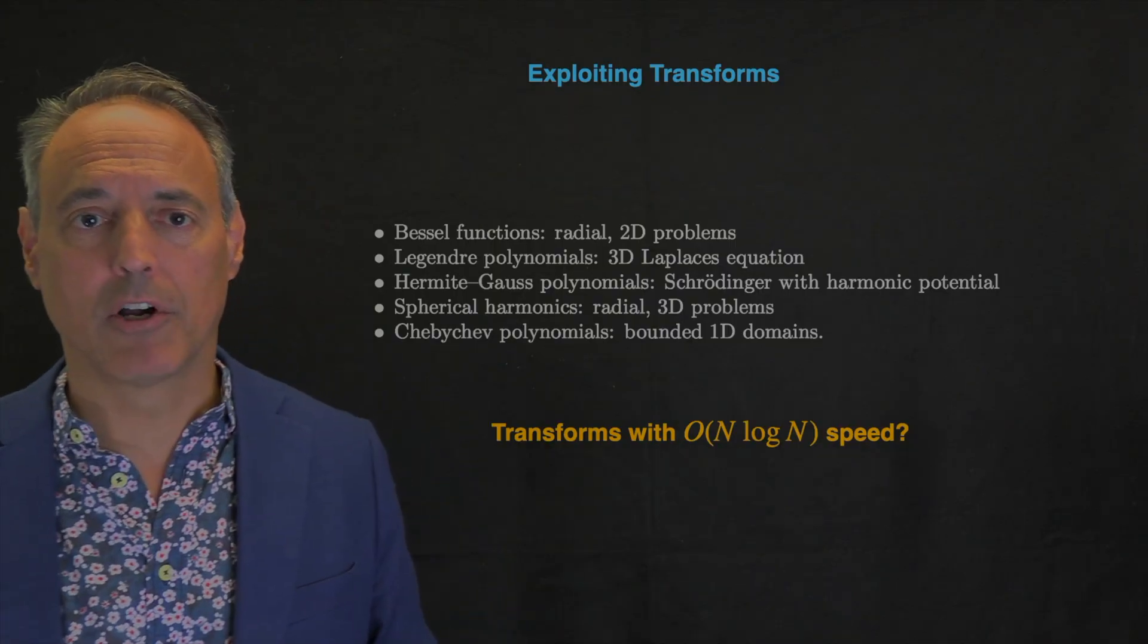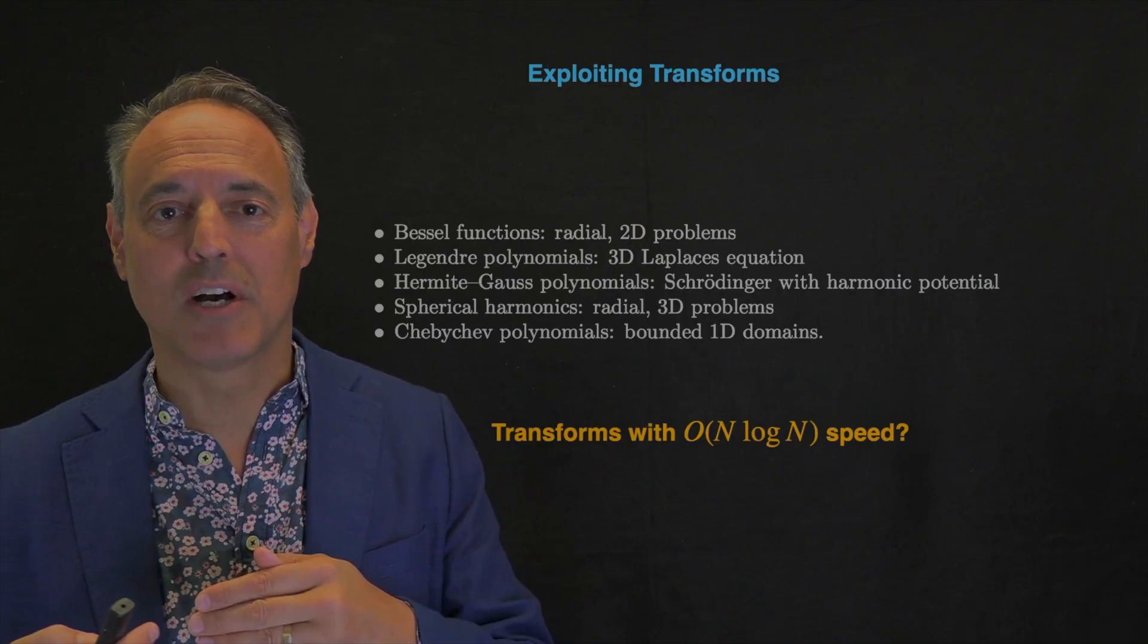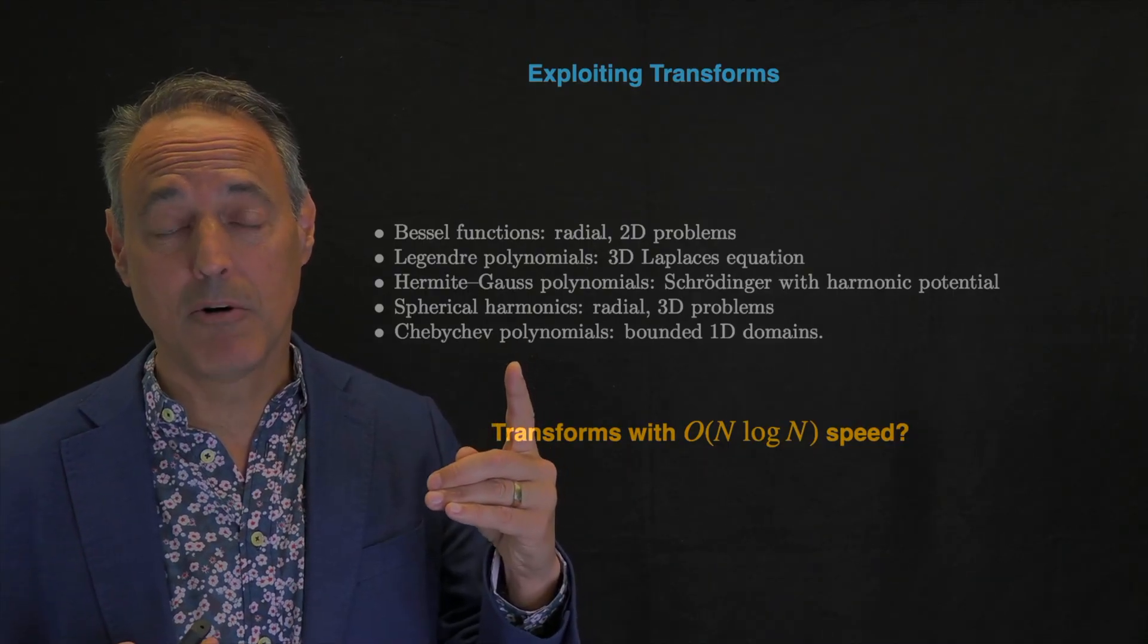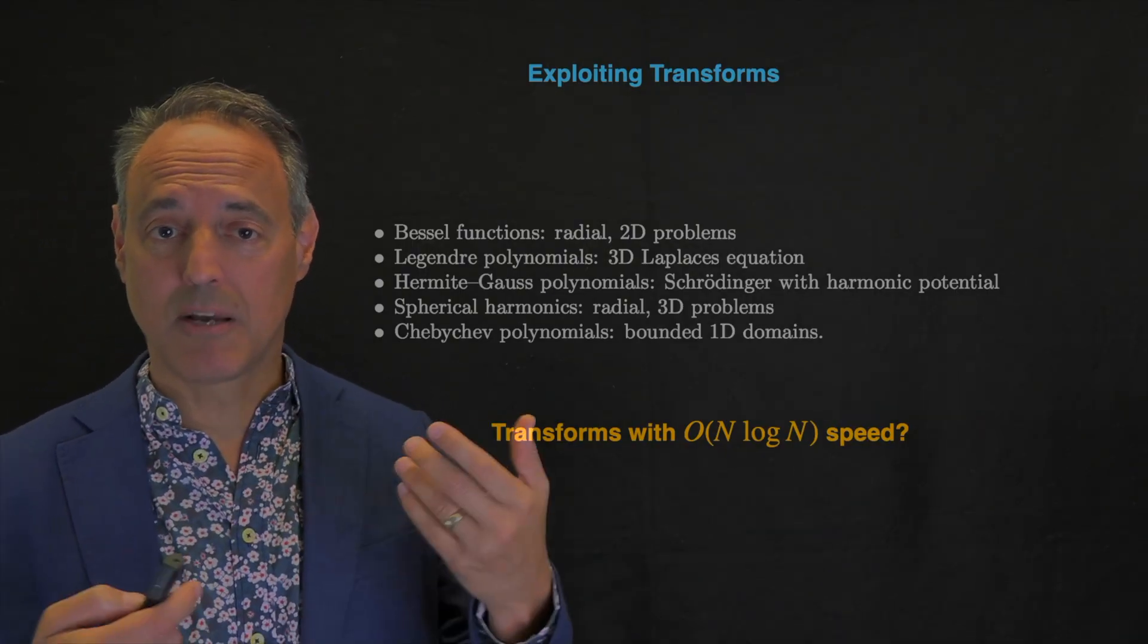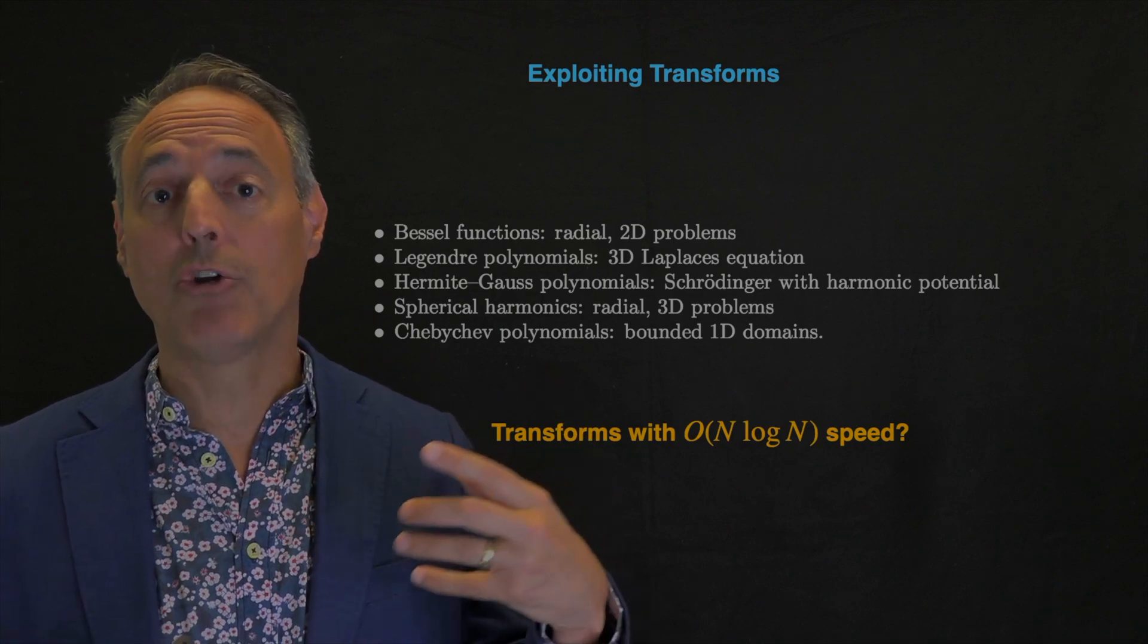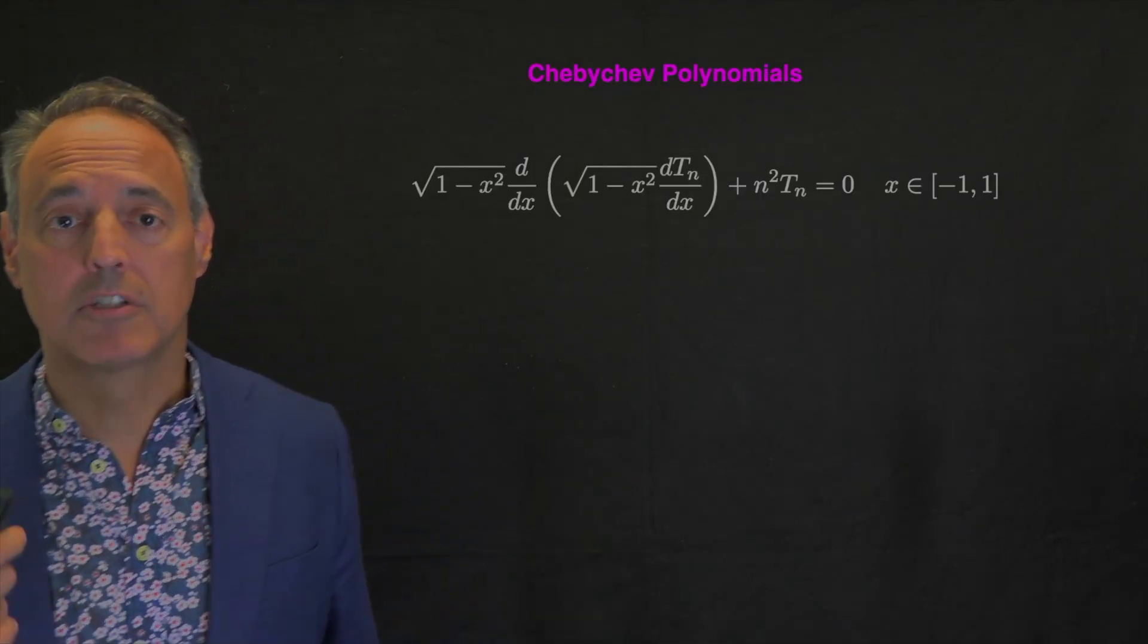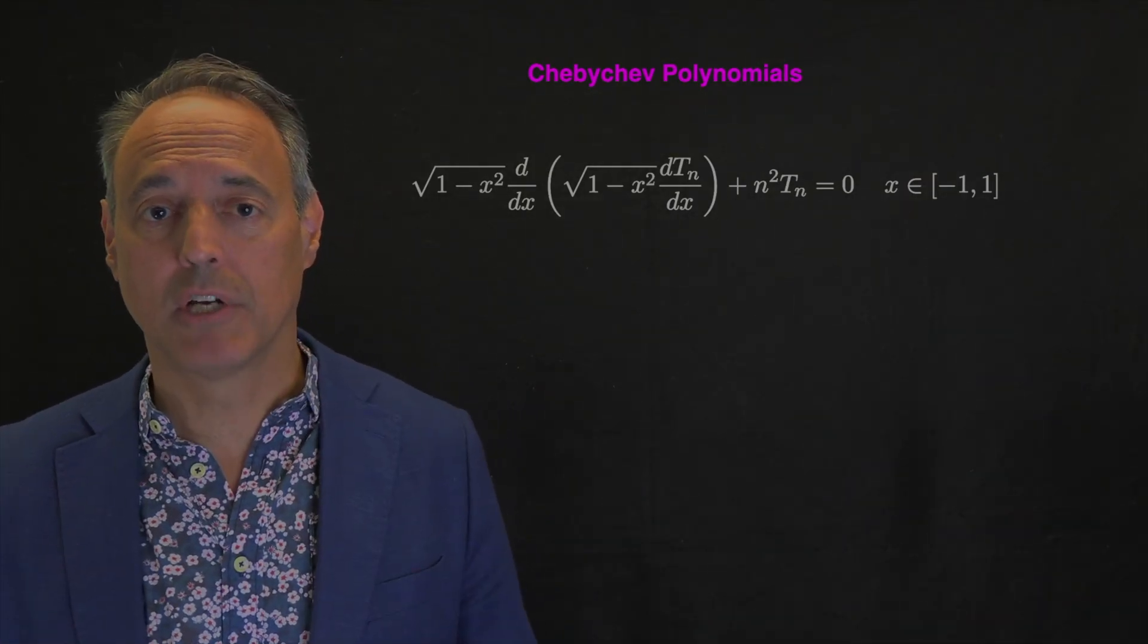You can get it to be n log n because there is a transform of Chebyshev to a cosine transformation, the discrete cosine transformation. It's like a transform of a transform. We use Chebyshev polynomials, then express them in terms of the cosine basis through another transformation, a double transform, which allows much more flexible representation of boundary conditions and you can do this all at n log n.